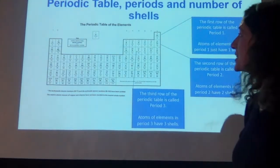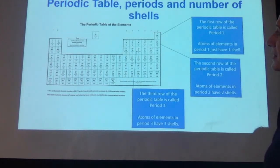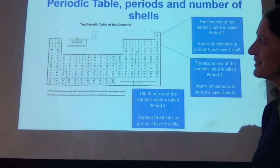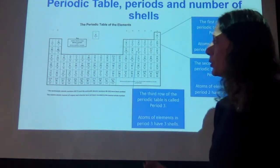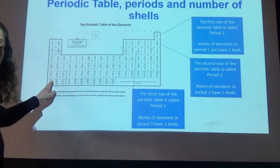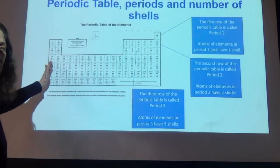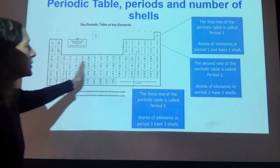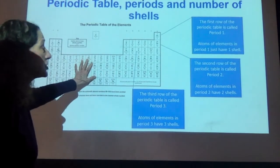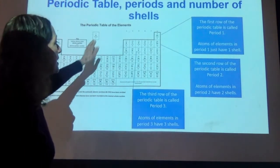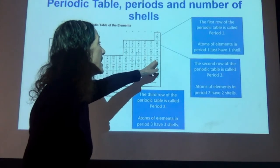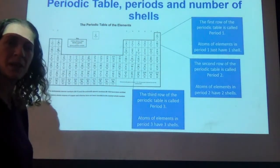Looking back at the periodic table from the last lesson — the modern periodic table is ordered by atomic number. The columns are called groups: the first column is group one, then group two. The middle section doesn't have a group number — those are called the transition metals. It then carries on with group three, four, five, six, seven, and then group zero. It's called group zero rather than eight — I'll explain that at a later time.